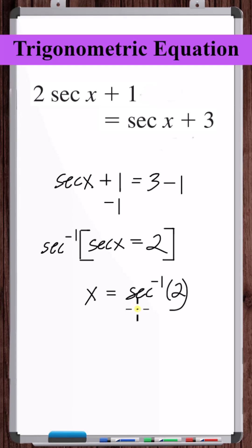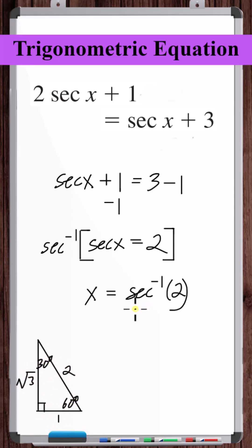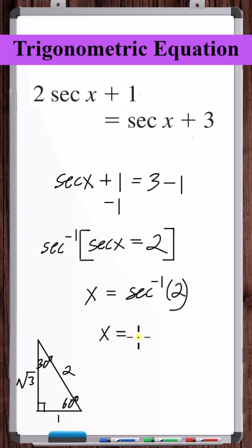Normally we would use a calculator to evaluate inverse secant, but in this case, with 2, we can use the 30-60-90 reference triangle. Secant is hypotenuse over adjacent, so secant of 60° is 2 over 1, which is 2. So one of the solutions is 60 degrees.